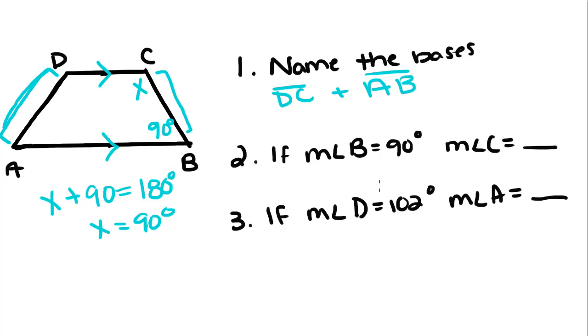If D is 102, what's the measure of A? So Y plus 102 equals 180. Subtract that over and you get 78.